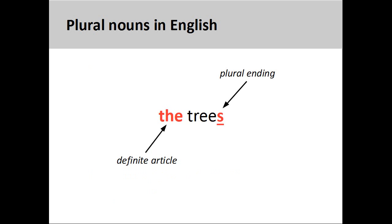It's easy to form the plural of a noun in English. One simply adds the plural ending S or ES to the noun. The definite article THE remains the same. German unfortunately is not that easy, as there are several different plural endings.